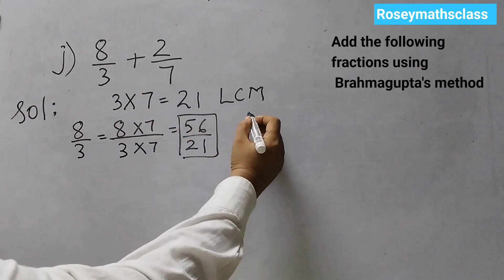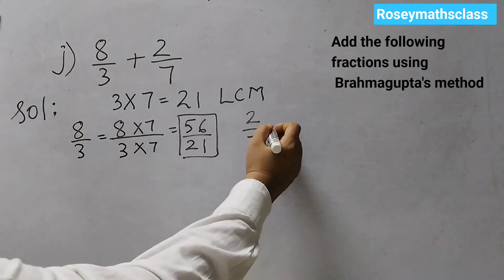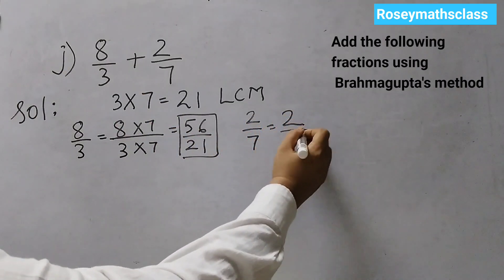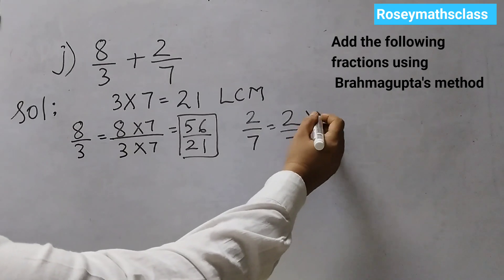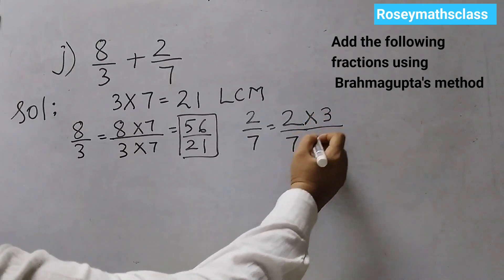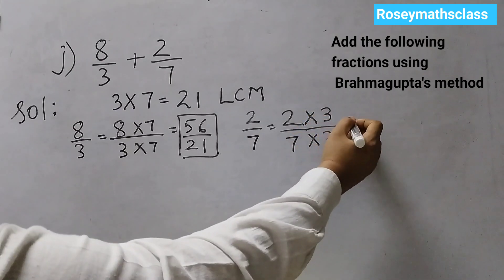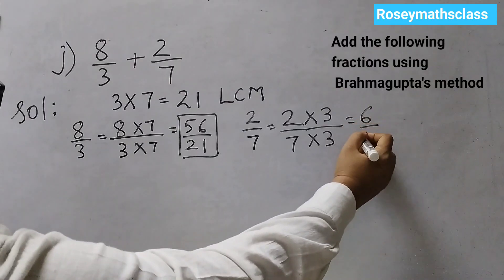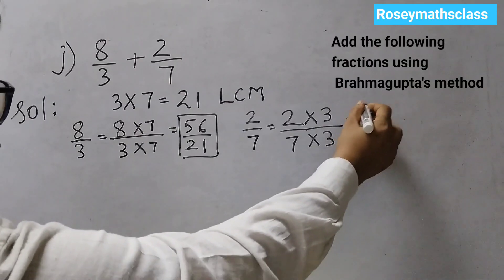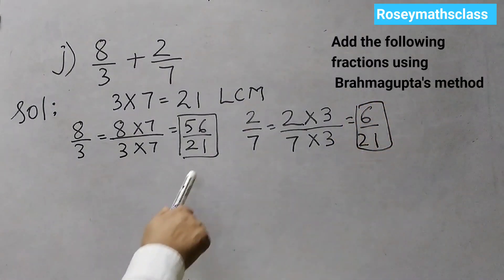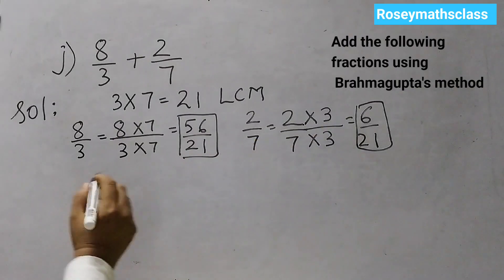And now, we will take the second one which is 2 by 7 multiplied into 3. So, 2 threes are 6. 3 sevens are 21.